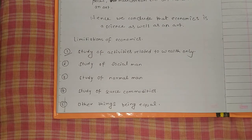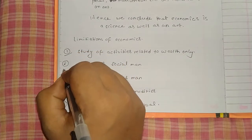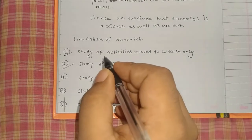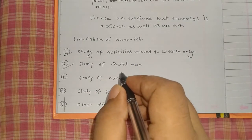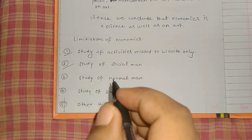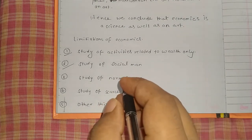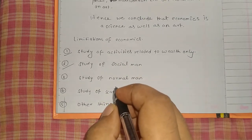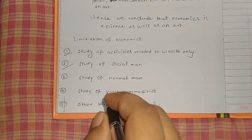The second limitation is that economics studies only the social man — the man who lives in society. People living in jungles or caves are not studied in economics. Only those persons who live in a society and are related to society are studied. Those who live in the jungle or caves are not included in the study of economics.